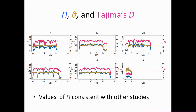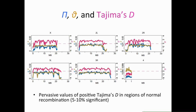What we found was really unexpected. In this figure, we have pi and theta on the left-hand axis and Tajima's D on the right-hand axis. Tajima's D is in pink, and the pink line across the graph is at zero. We see values of pi consistent with other studies — no overall reduction in variability. However, we see pervasive positive values of Tajima's D in regions of normal recombination. Using the most stringent cutoff, 5–10% of windows are significant, but overall Tajima's D is elevated across all regions of normal recombination.